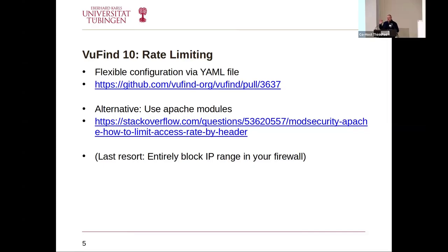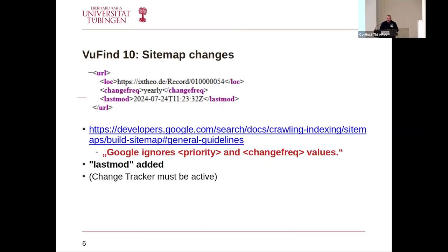As an alternative, you can also use HTTP server modules like Apache modules. There's an example on Stack Overflow using mod_security where you can specify in detail which user agent will be allowed to crawl and at what rate, in case you want to limit or deny it at a lower level. As a last resort, many people have problems being crawled by bots from China, so you can change your firewall rules and block IP ranges — however, IP ranges used by bots may change, so you still have to keep an eye out permanently.